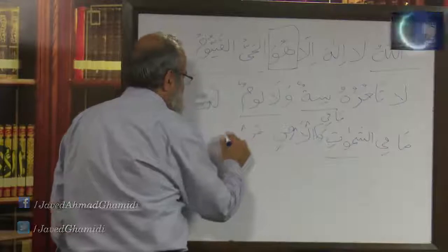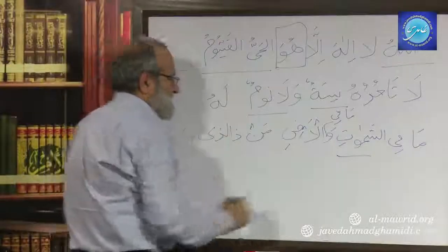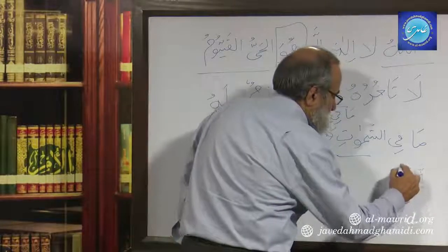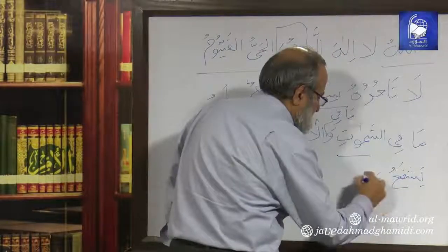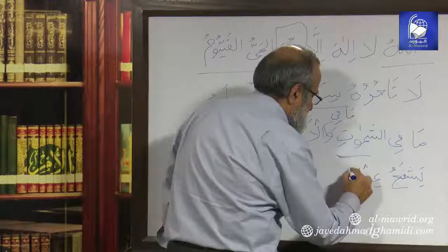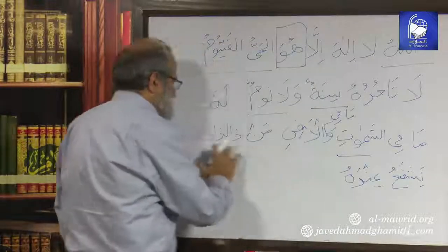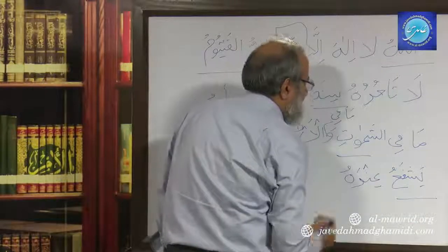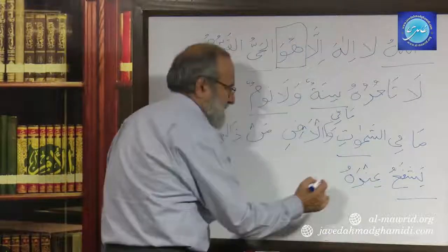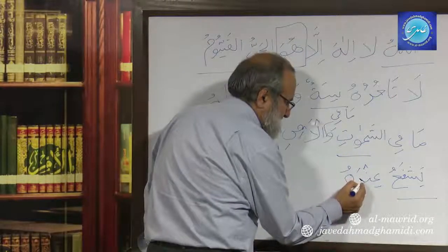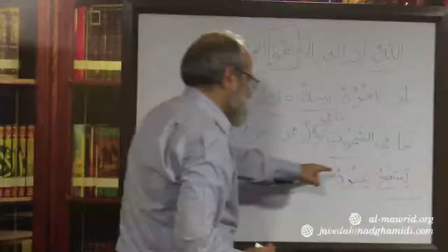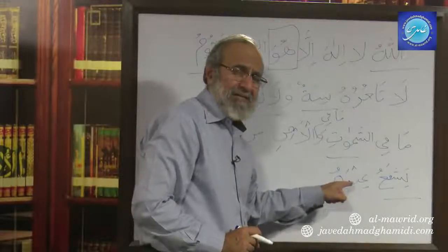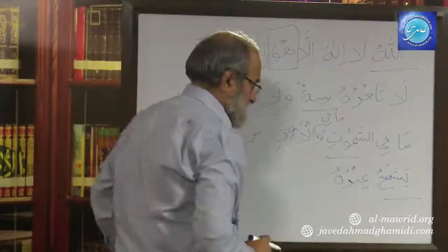Man zallazi — who is there? Yashfa'u — that can intercede. Indahu — before him. Man we have not discussed, zallazi we don't know very much about. Yashfa'u is a verb — intercedes or shall intercede. Indahu — before him. The only thing is that this indah, which is a noun, has a Nasab at the top of it. We need to figure out later why Nasab appears on indah and why it is one harakat and not two, despite indah not being preceded by alif laam.